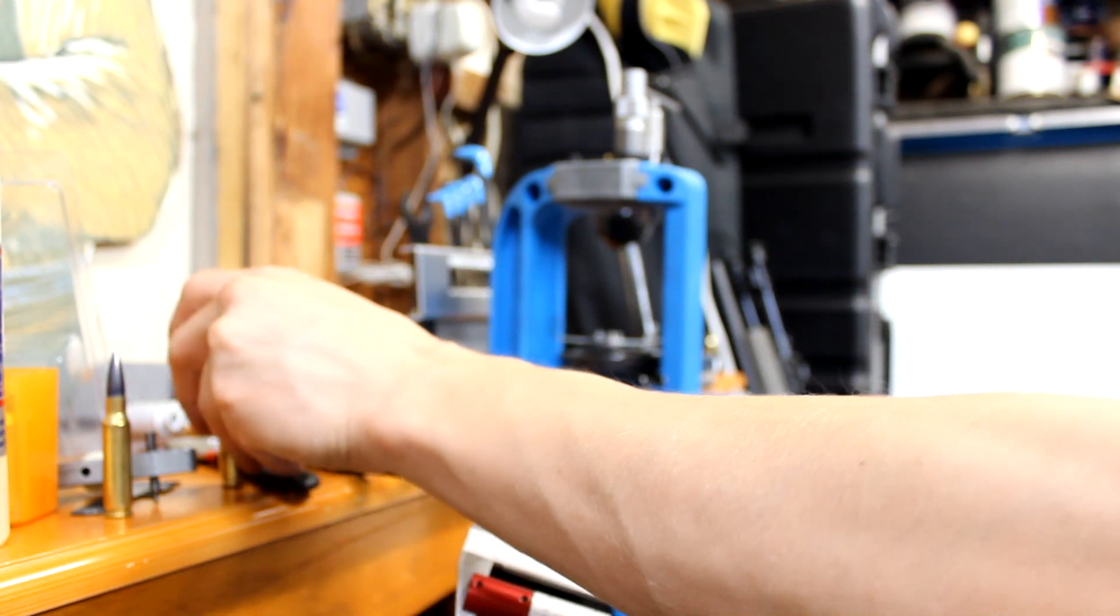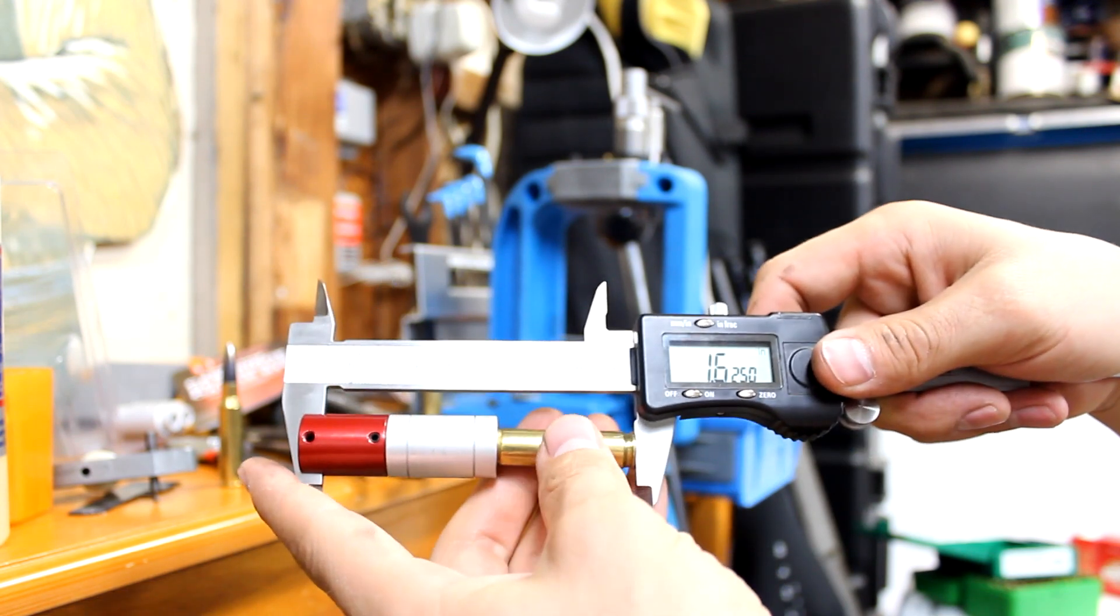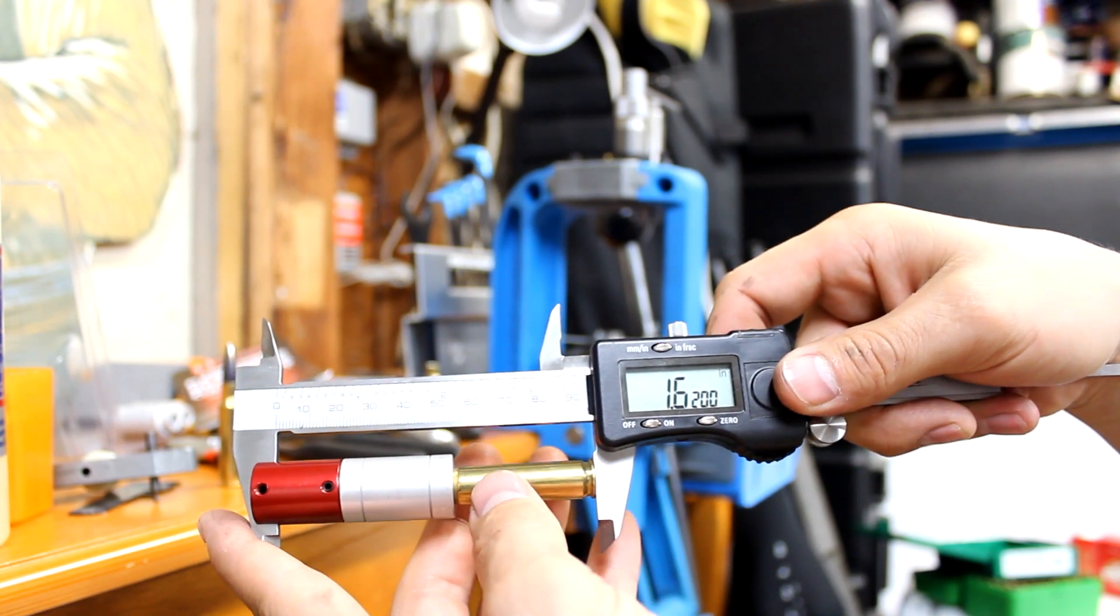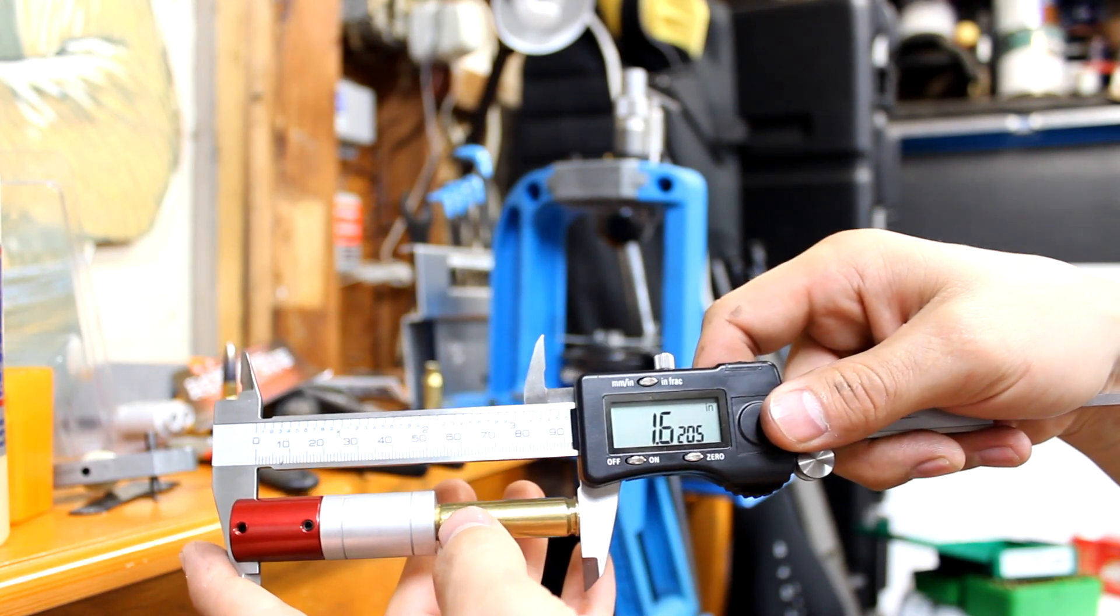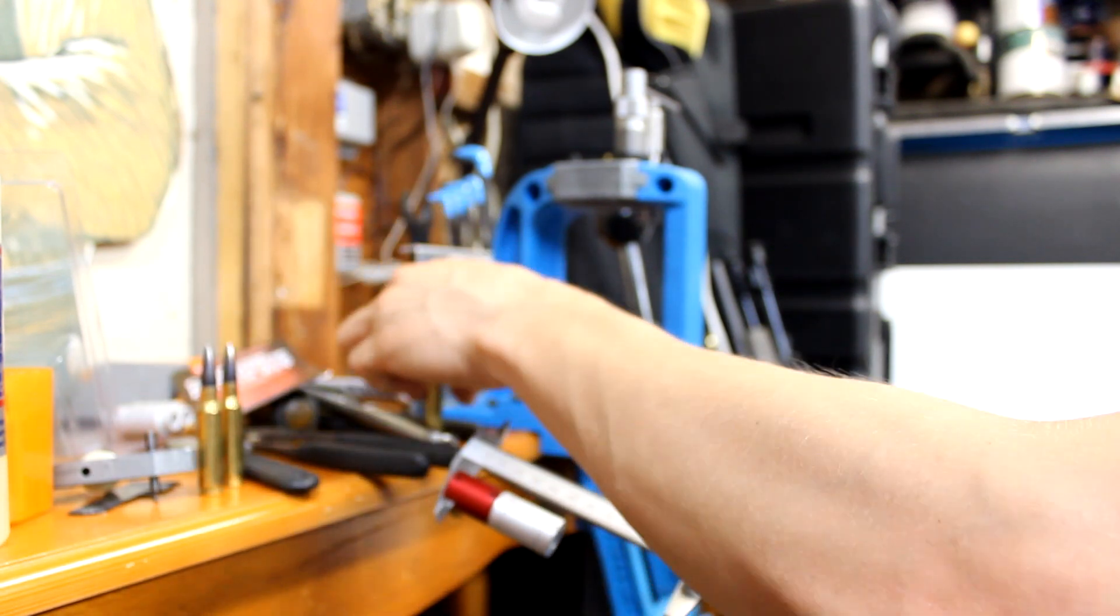And I'll take another Black Hills ammunition here. 1.6205. So we know that's a good baseline to go off of.